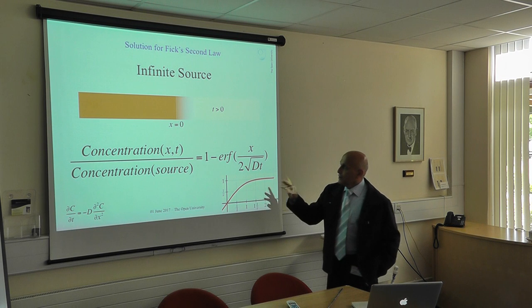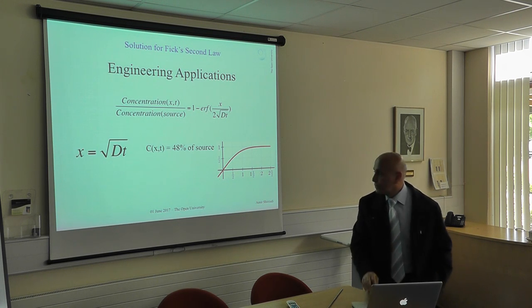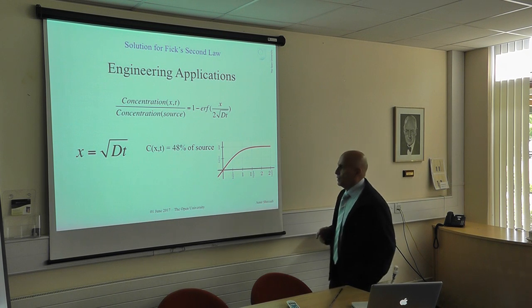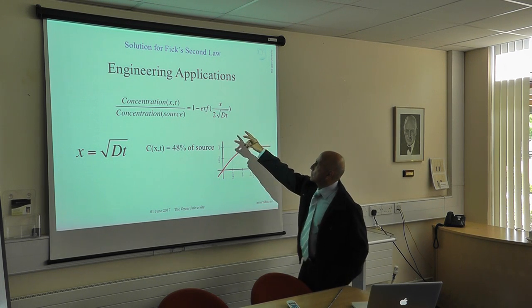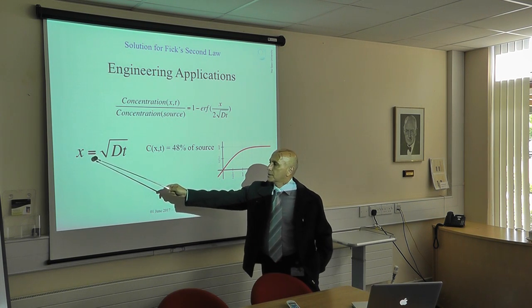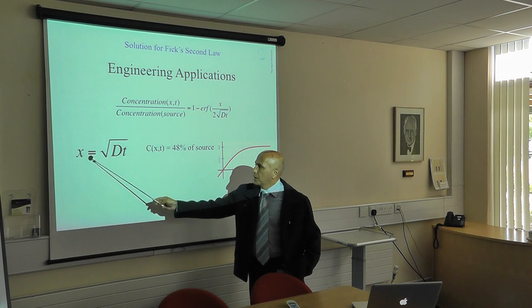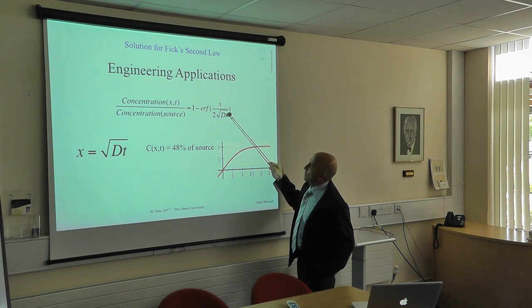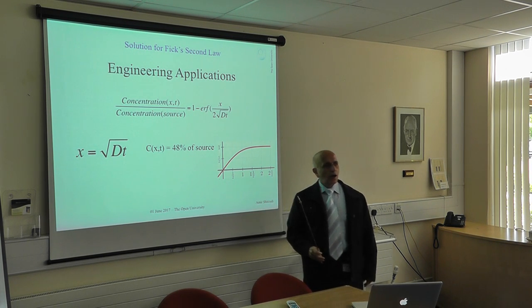Engineering application: let's say you want to carburize iron — you want to diffuse certain elements on the surface of the iron or steel. You don't want to wait 100 years, so you need a ballpark figure of how long to wait. Looking at this equation, at distance X, what you can control is time and temperature. For example, put half a millimeter for X and two hours for time — in that scenario, the concentration at that particular depth will be almost half of the maximum concentration you can get.